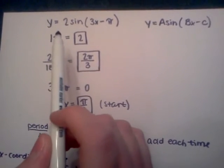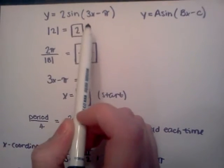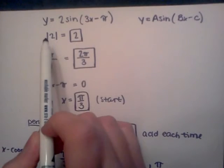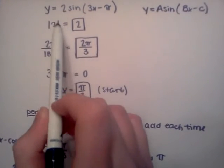Sketch one cycle to graph y equals 2 sine 3x minus pi. To find the amplitude, you take the absolute value of a, so it's 2.